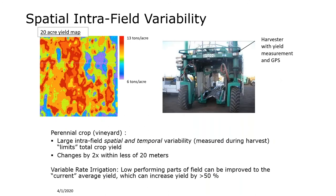Here is one example showing a yield map — how much production you get per unit area. In this case it's grapes, but this applies to any crop like corn or soy. Looking across a 20-acre area, you see huge fluctuations in total yield — from roughly 6 tons per acre all the way up to 30 tons per acre. On larger farms, these fluctuations are even greater.